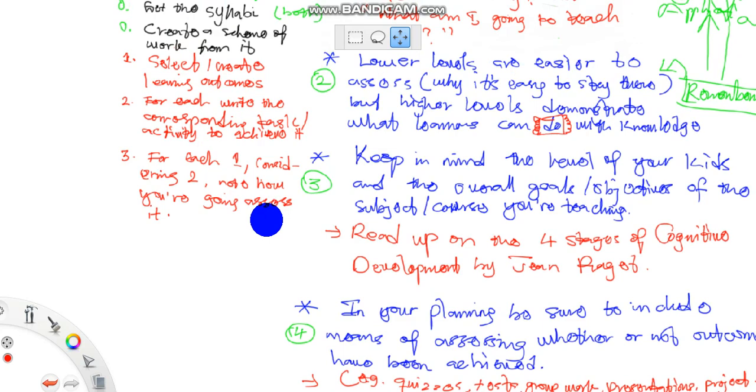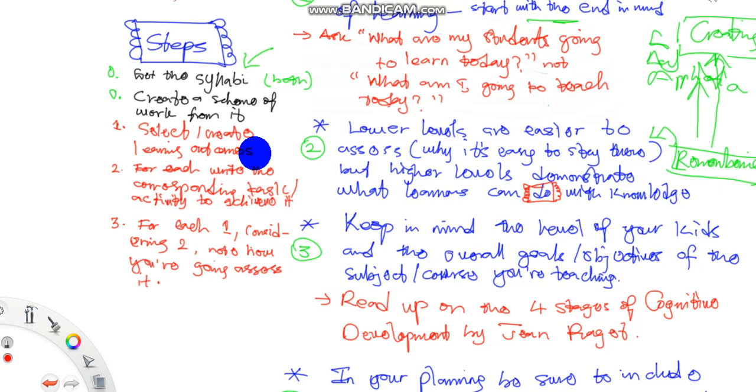So the steps you should take: first of all make sure you have the syllabus, create a scheme of work. This is often required before the term starts even. And then select the learning outcomes from your scheme of work. Your syllabus often should contain what the children are supposed to learn so you select learning outcomes or create them.